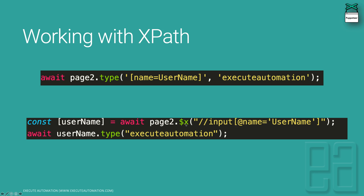That's exactly what I did here as well. With $X, I put double slash input with @name equals username. I'm returning that particular value as an array variable so I can then perform an action on it — it's an expression we use to perform an action within that element. So I'm going to perform a type operation for that variable. This is how we can work with XPath.